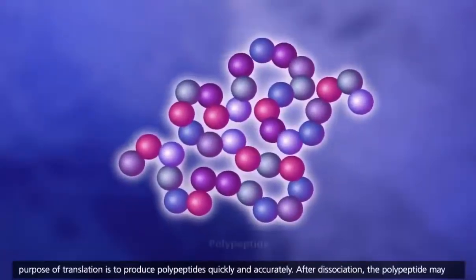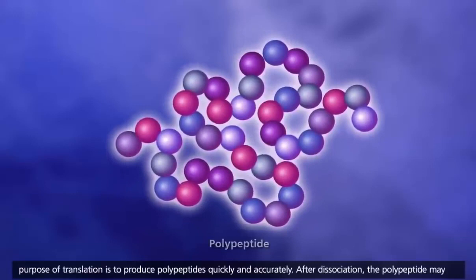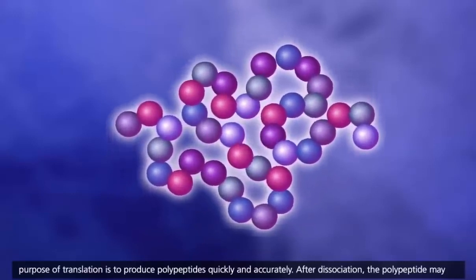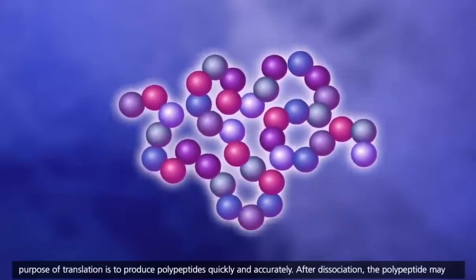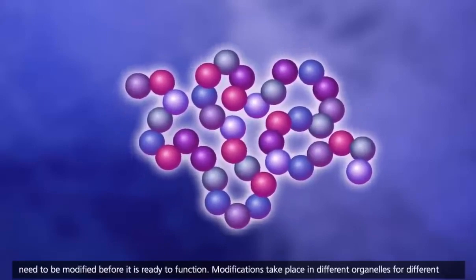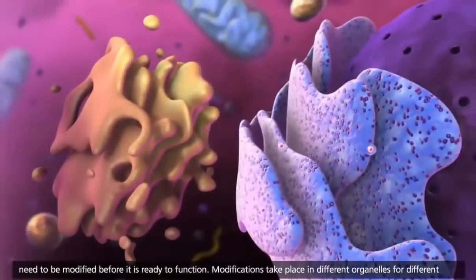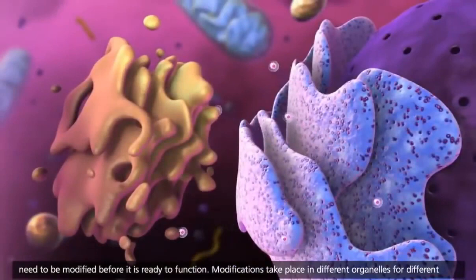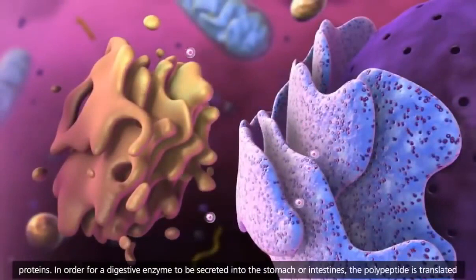The purpose of translation is to produce polypeptides quickly and accurately. After dissociation, the polypeptide may need to be modified before it is ready to function. Modifications take place in different organelles for different proteins.